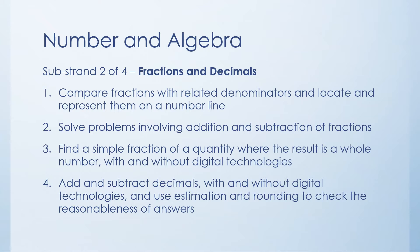The second content descriptor here is just adding and subtracting fractions. The third one is finding a simple fraction of a quantity where it gives you a whole number. So as an example half of ten will of course be five. So that's a fraction half of a whole number ten and your answer is also a whole number five. And number four is adding and subtracting decimals with and without calculator and then estimating to check to see if it makes sense if it's a reasonable answer.